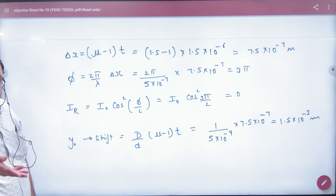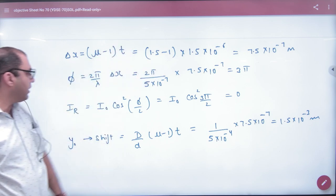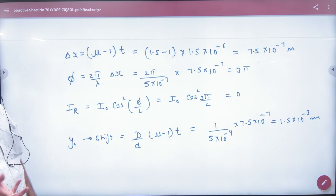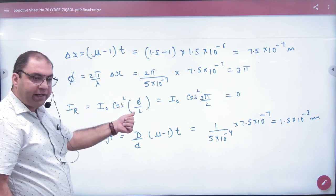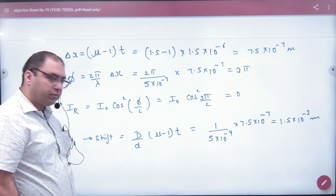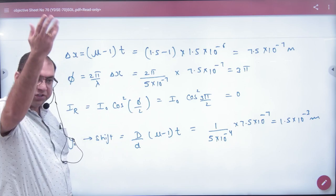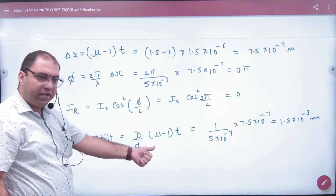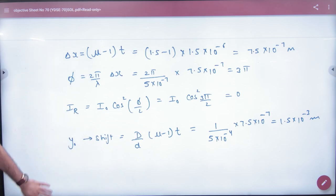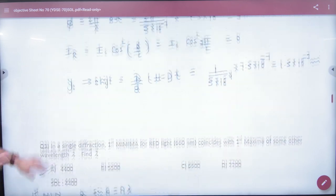So how much phase covered? 2π by λ into path difference, phase covered. So what will be the resultant intensity value? I₀ cos² φ/2, φ put, answer. And how much shift happened? This already we have done, D by d, (μ-1) into t, the answer. Formula based question. It is diffraction.